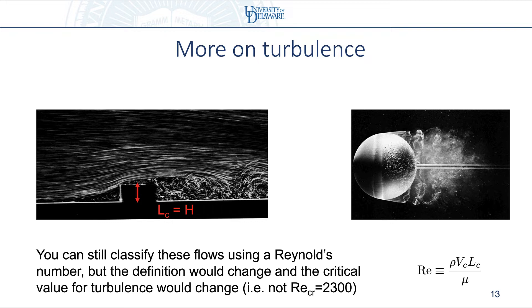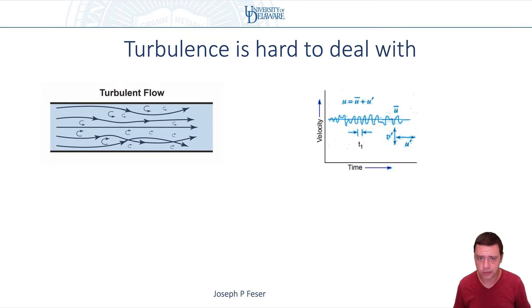So instead of like diameter of the pipe, you might choose like the height of the barrier in the case of a step barrier, or the diameter of a sphere. So how you would define the critical length scale would be one thing, and then the other thing is that just the value of the Reynolds number would turn out to be a little bit different.